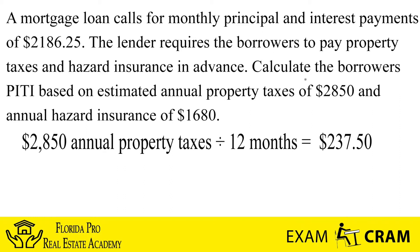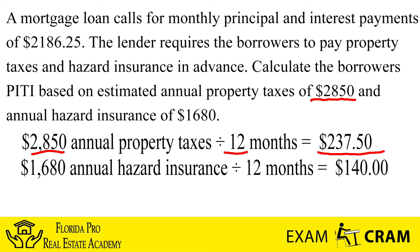So again, where we get that number: $2,850 divided by 12 gives us $237.50. For the next step, we take the annual hazard insurance premium of $1,680 and divide it by 12 months, which gives us a total of $140.